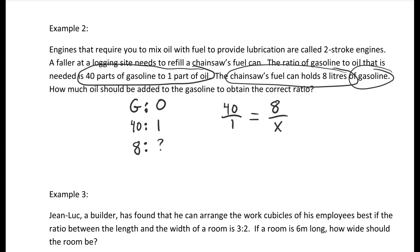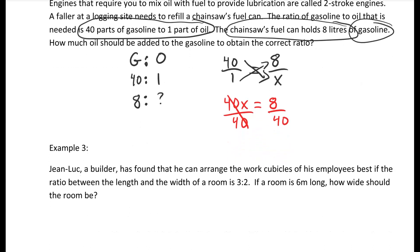Our ratio turns into a fraction: 40 over 1 equals 8 over x. We cross multiply, so 40 times x gives you 40x equals 1 times 8, which is 8. We isolate x by dividing by 40 on both sides, leaving x equals 8 divided by 40, which is 0.2 liters. Don't forget to put your liters in as your unit.